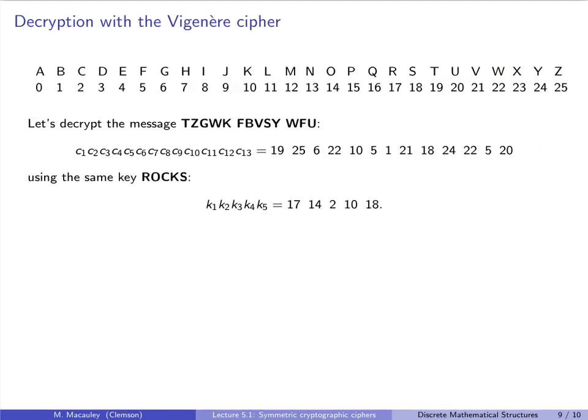Let's now see how to decrypt. Let's also do this by an example. And we will decrypt a different message: T, Z, G, W, K, F, B, V, S, Y, W, F, U. So here I am preprocessing this into blocks of length 5. I'm not necessarily saying that the message is a length 5 word followed by a length 5 word and then a length 3 word. Not at all. This is just how we process it. And so in base 26, this length 13 message is this string of numbers. So before I tell you that I'm using the key rocks, let's think about how you would actually handle this if you intercepted this message from an enemy and you needed to decrypt this.